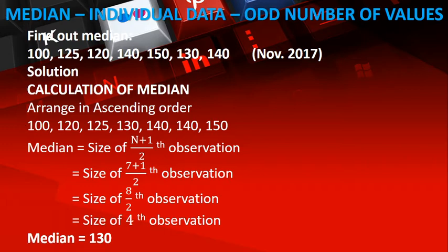While arranging: the least value 100, then 120, 125, 130, 140, 140 again, 150. The given data is now arranged in ascending order.